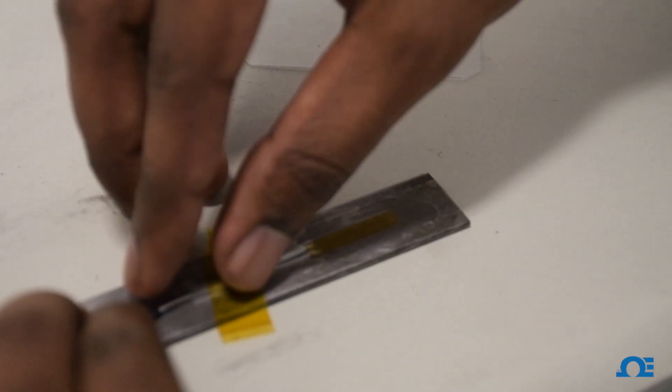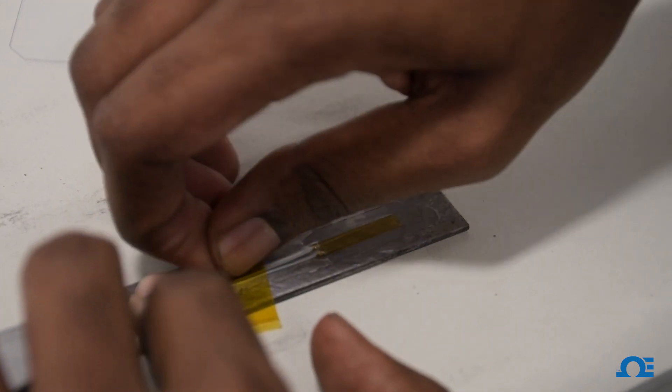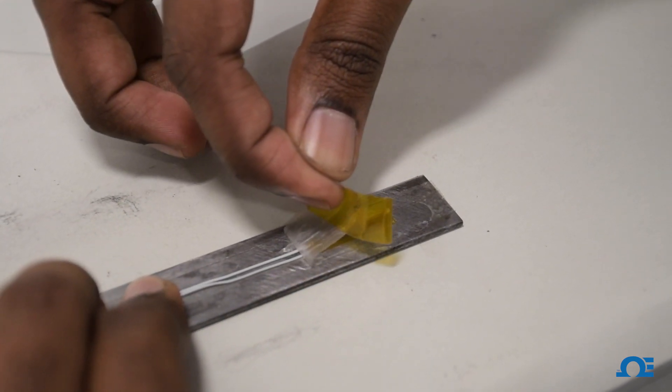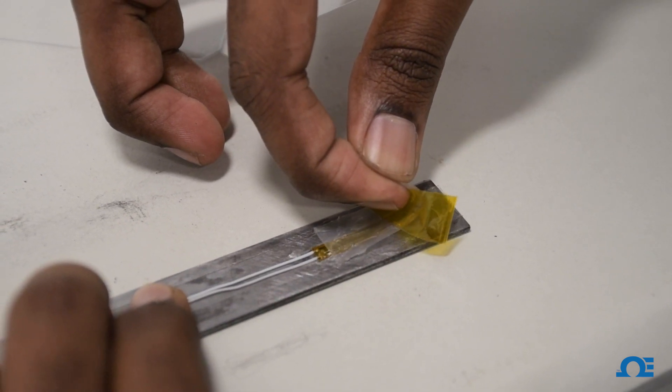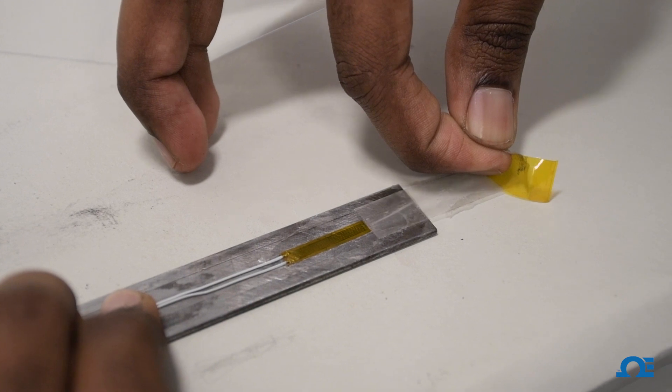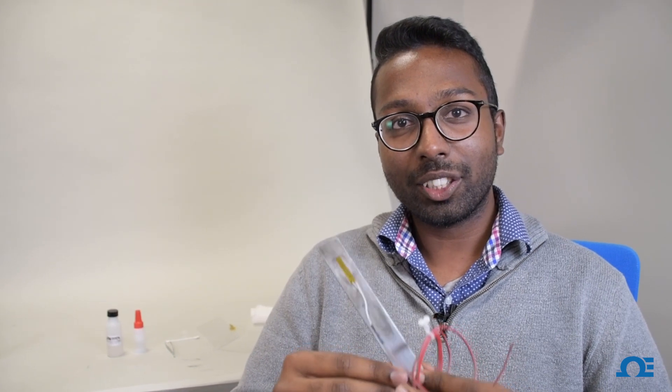And once it is cured completely, remove the tape carefully from one end. There you have it folks! A strain gauge attached to the surface of the stainless steel bar.